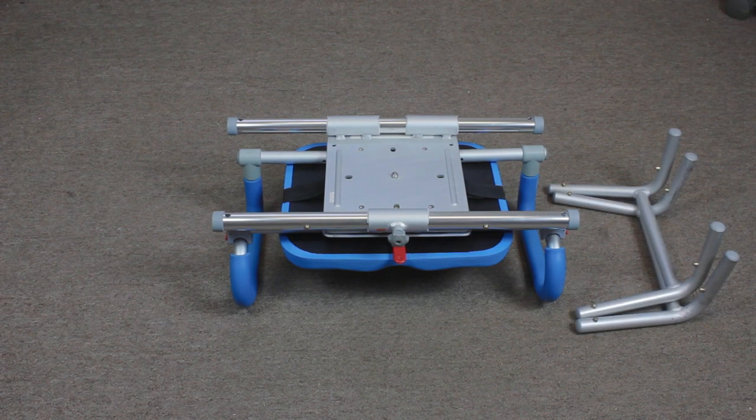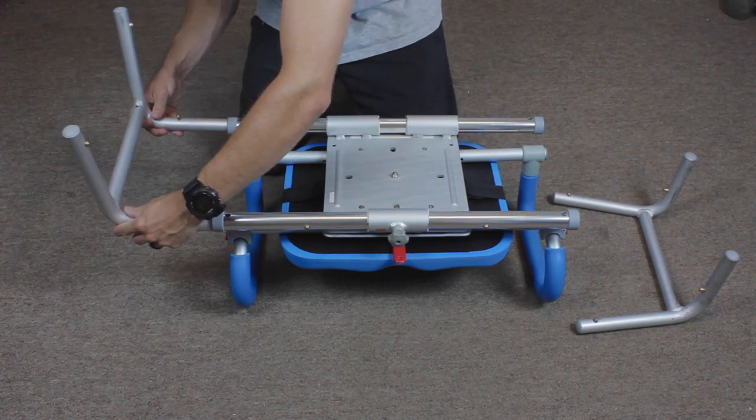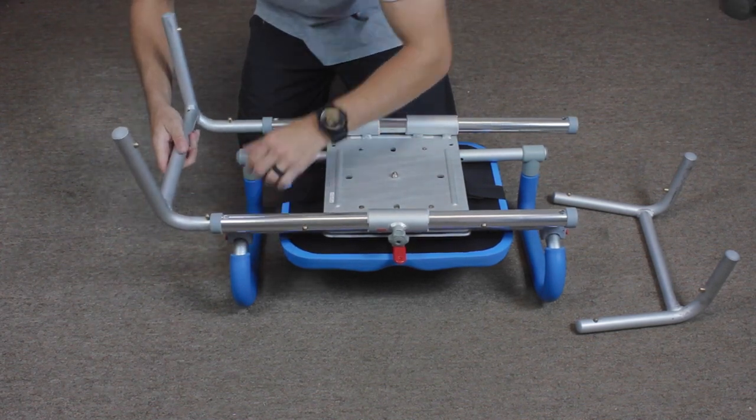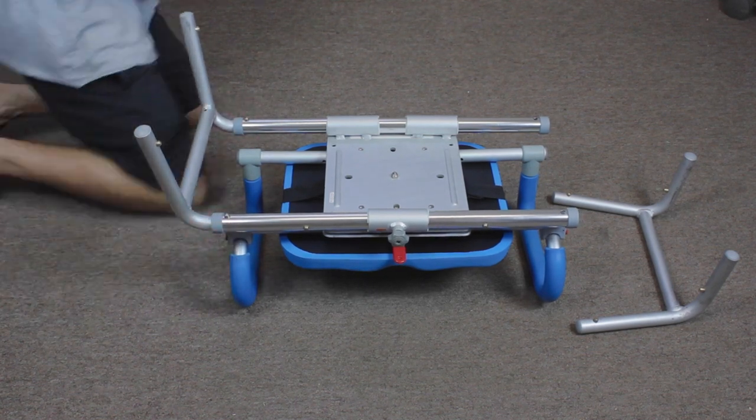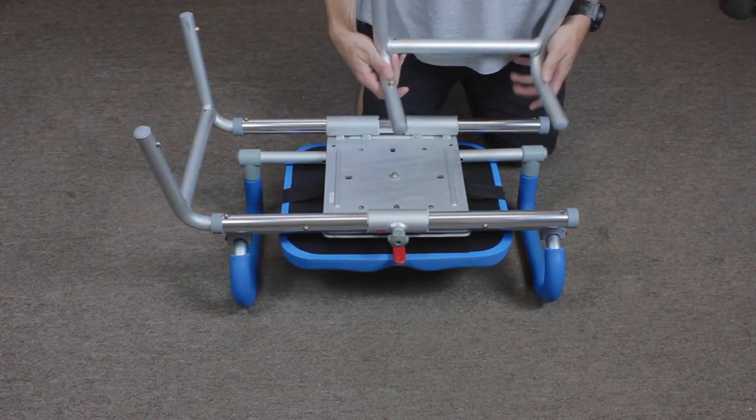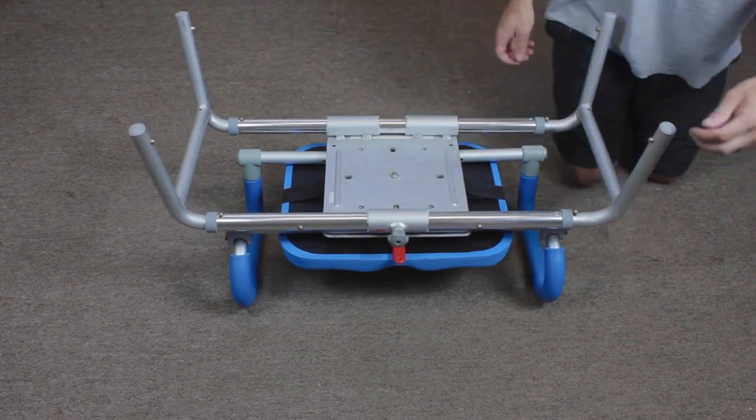Next you want to grab the leg brackets and install them into each horizontal rail. You'll notice that there are circular cutouts on each horizontal rail and the brass buttons on the shorter end of the brackets is what goes into the horizontal rail.